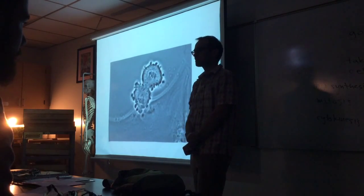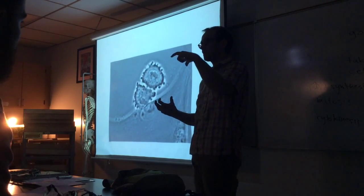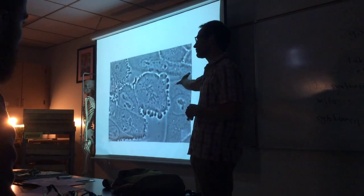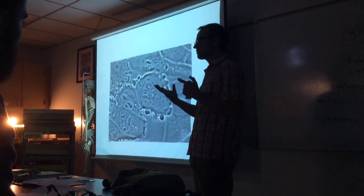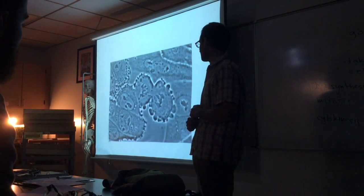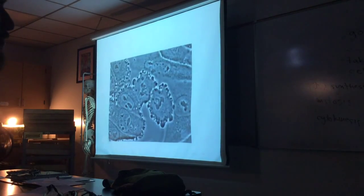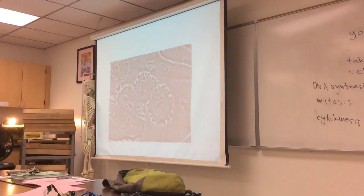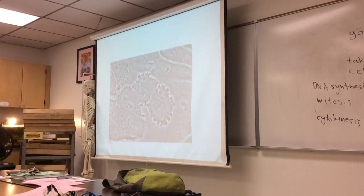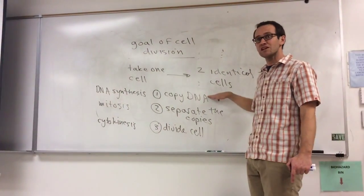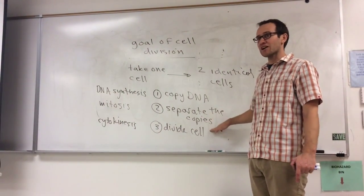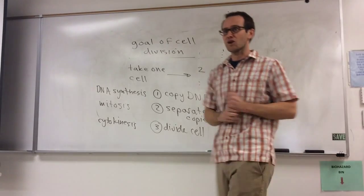So when we draw this process using kind of these cartoon-like objects, it's because in real cells they kind of look like that to some extent. And so it's actually a pretty good way to conceptualize it. And if you ever get confused along the way, just remember the goal is to take one cell and make two identical cells. And you do that by copying the DNA, separating the copies, and dividing the cell. And that's it. Let's take a break.